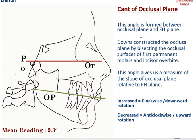Now for the five dental parameters in Downs' analysis. The first is the cant of occlusal plane, constructed by intersecting the Frankfurt horizontal plane with the occlusal plane. Downs constructed the occlusal plane by bisecting the occlusal surfaces of the first permanent molars and incisor overbite. This angle measures the slope of the occlusal plane relative to the Frankfurt horizontal. An increased cant indicates clockwise or downward rotation of the occlusal plane; a decreased cant indicates anti-clockwise or upward rotation.